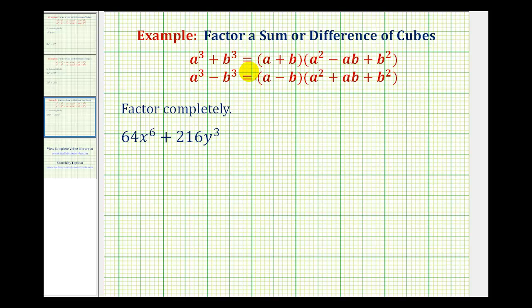Welcome to one more example of factoring a sum or difference of cubes. We've already reviewed these formulas, so let's take a look at our example. We have 64x^6 + 216y^3. This is about as challenging as they get.